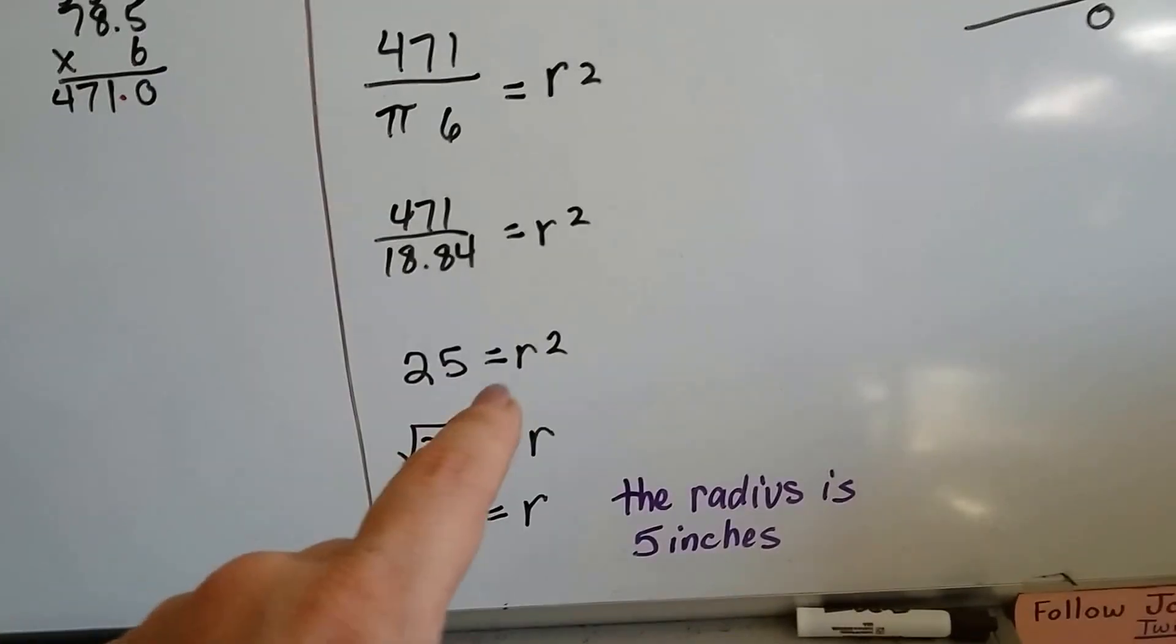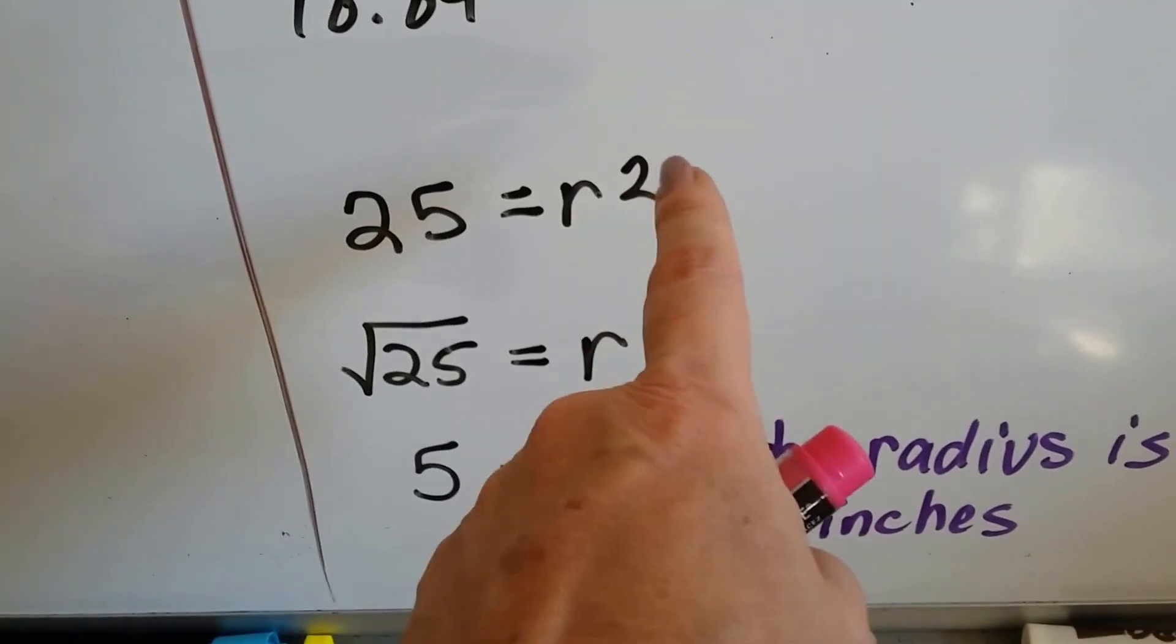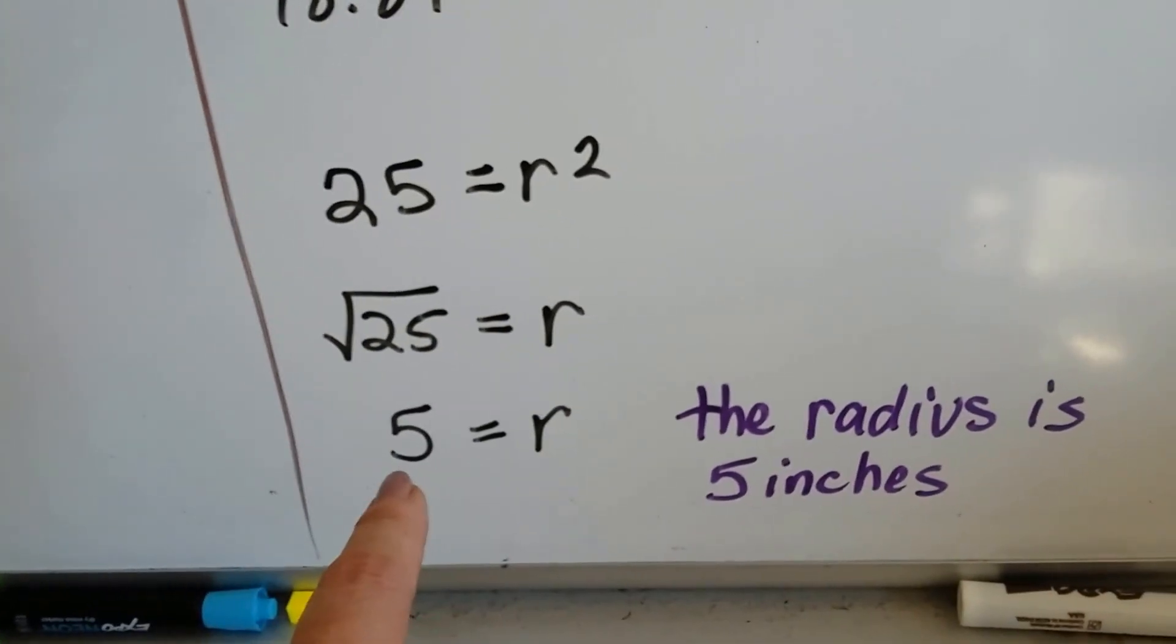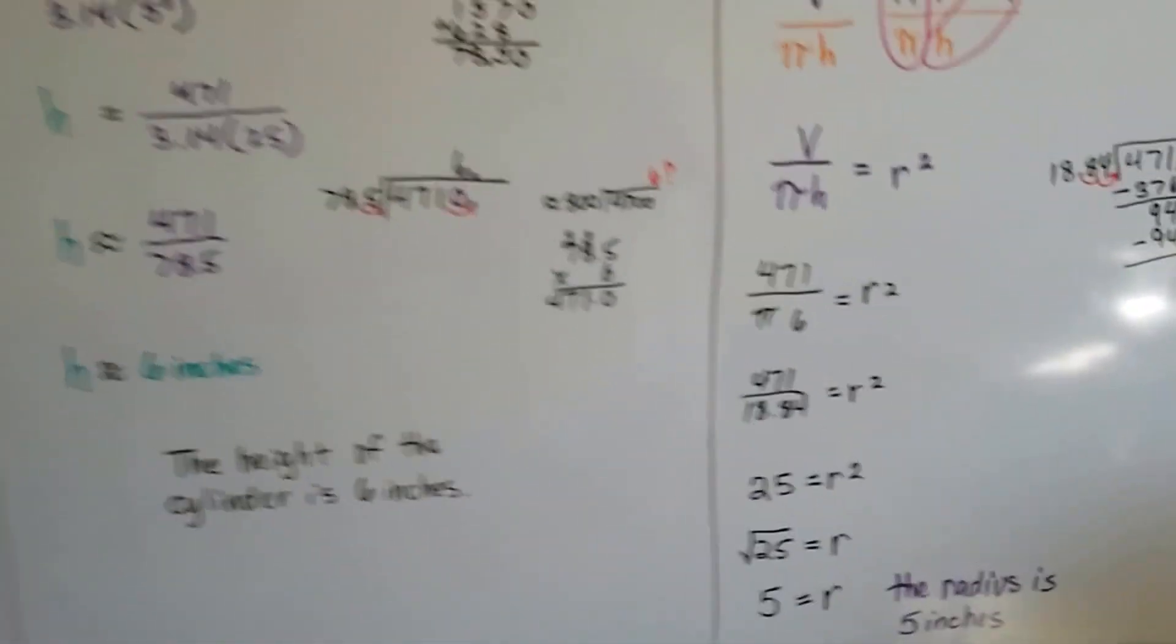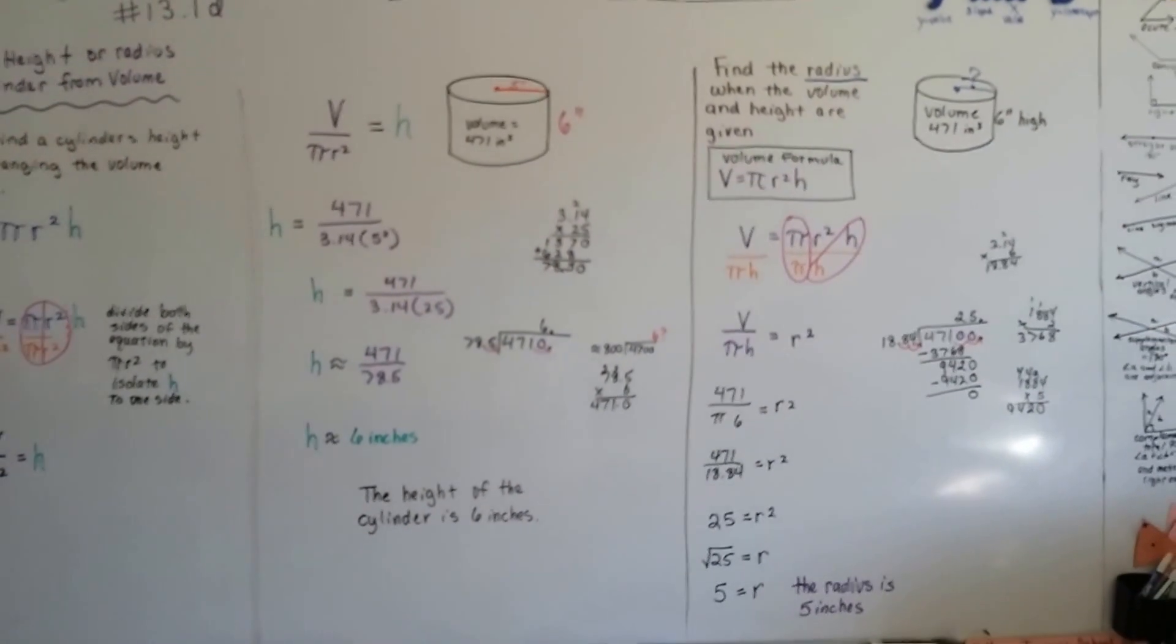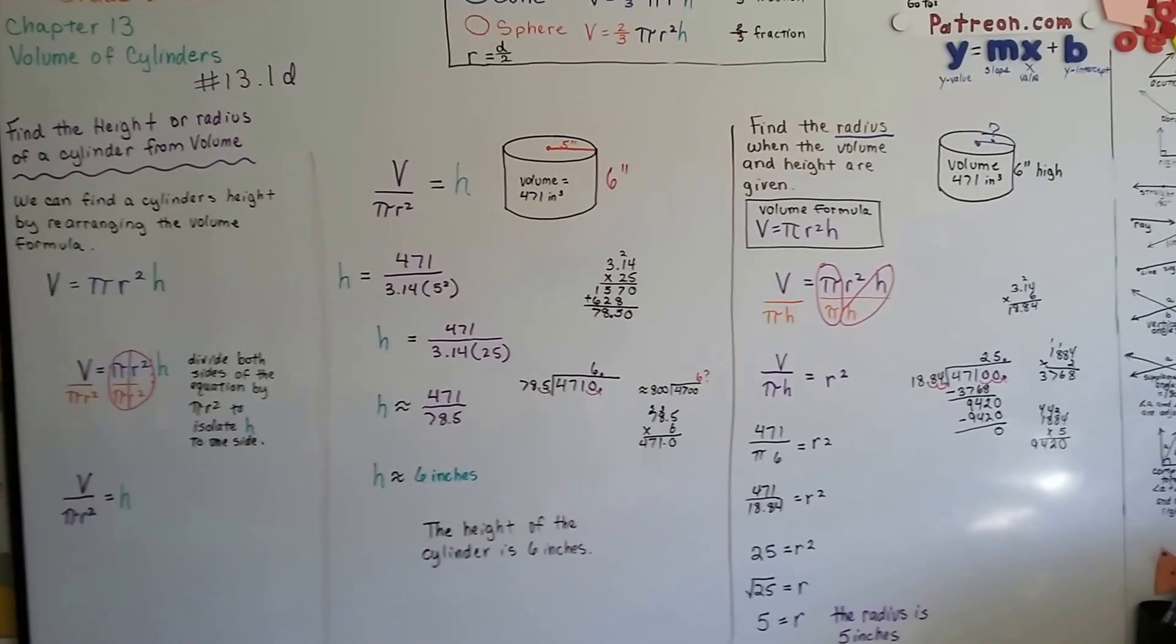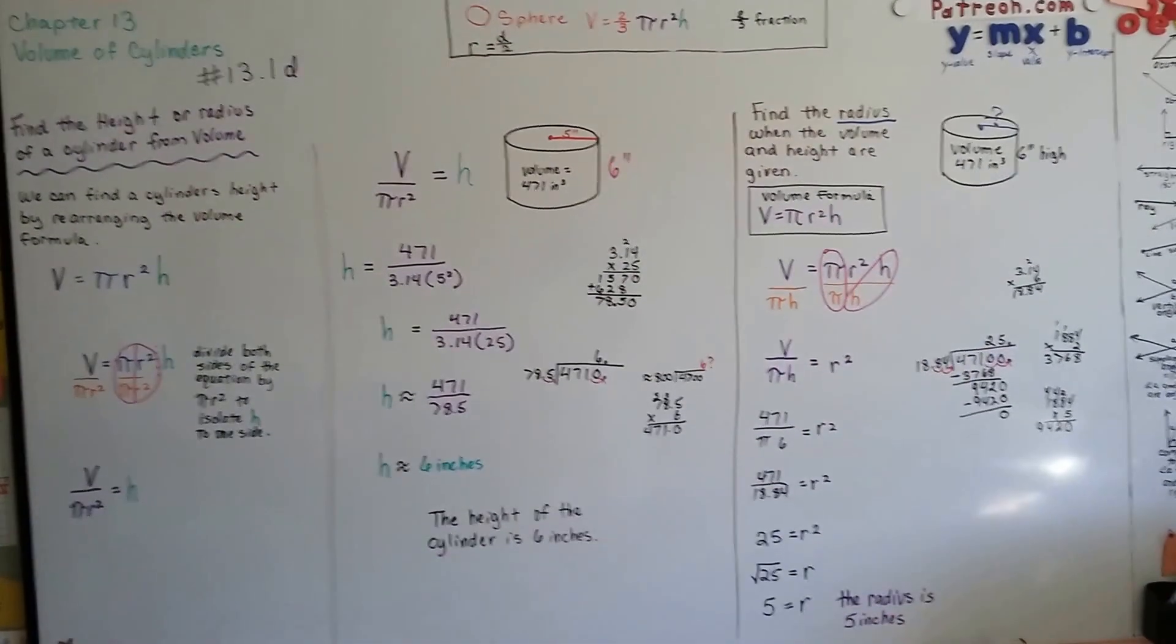So that means 25 is equal to r squared. Remember what we talked about before? We can take this little square off and put a radical sign around the 25. So the square root of 25 is equal to the radius. The square root of 25 is 5. So we know that the radius is 5 inches. We can just move this formula around to however we want by dividing one side by the other values to get the value alone on one side that we need to solve for. If we're solving for height, we want to get the h to one side. If we're solving for radius, we want to get the radius to one side.